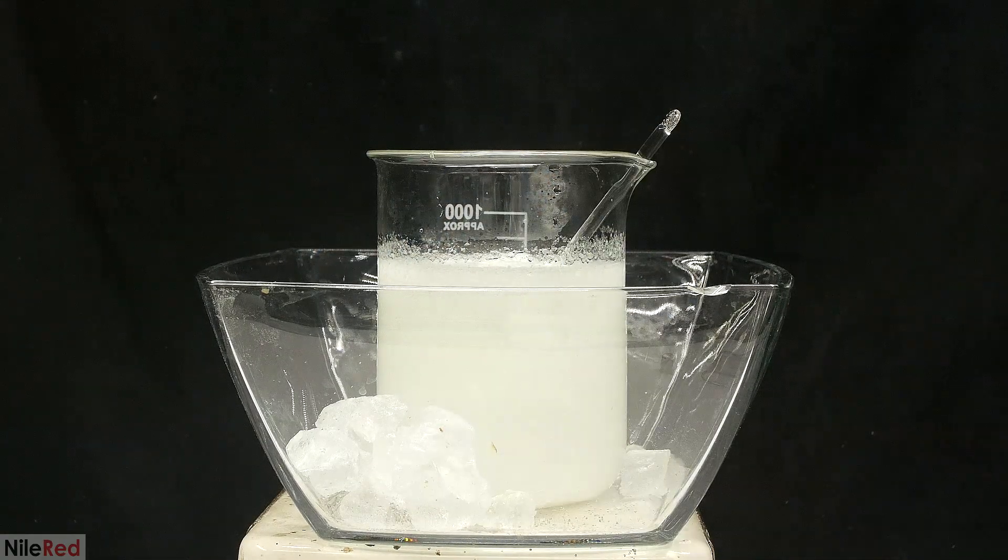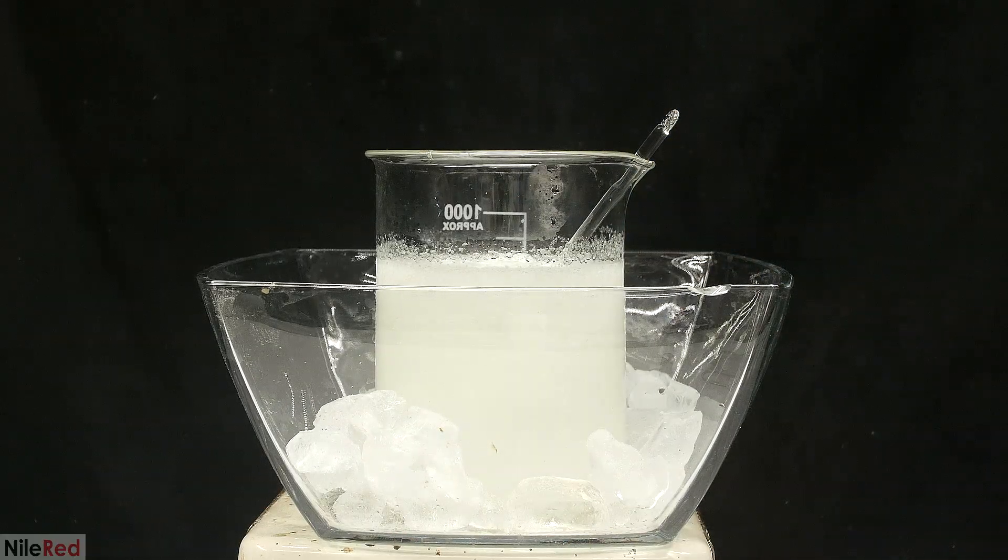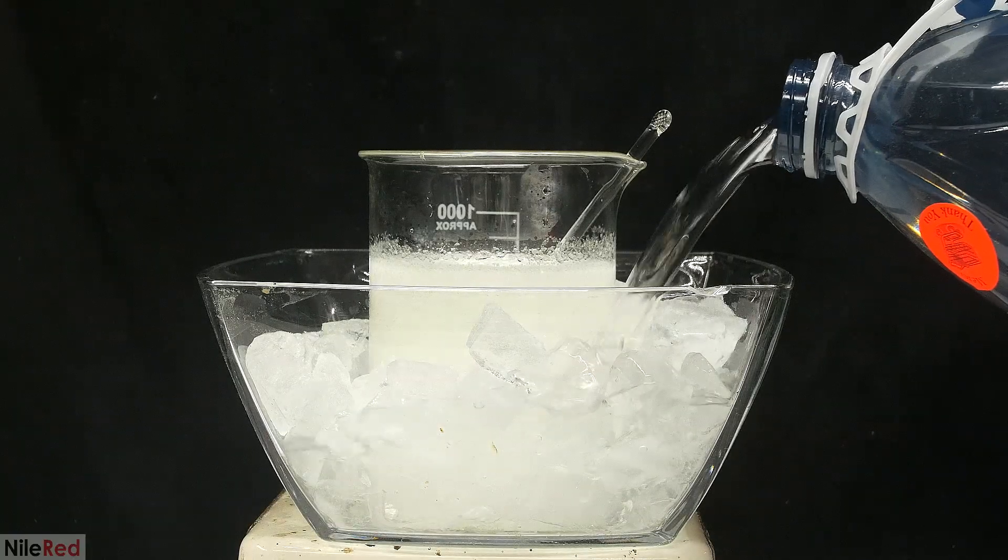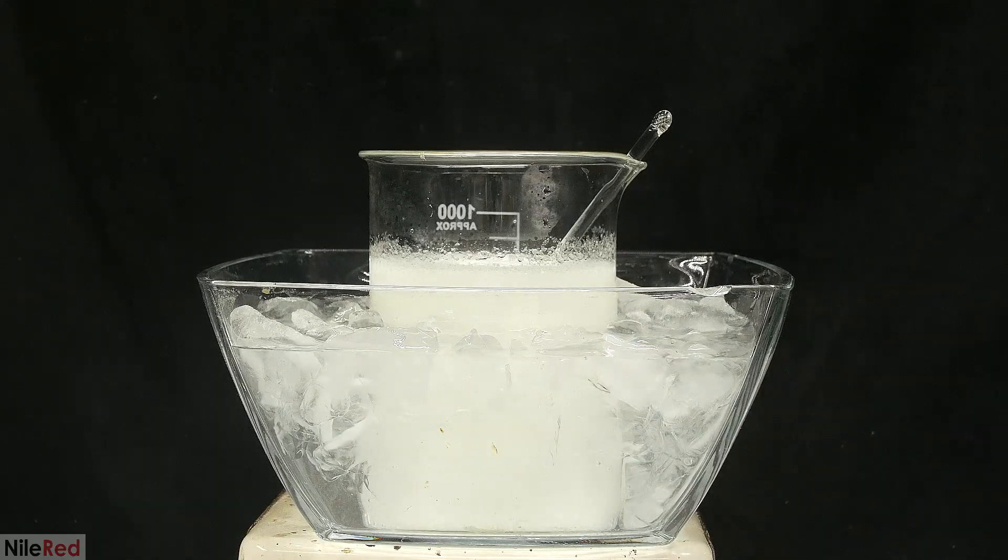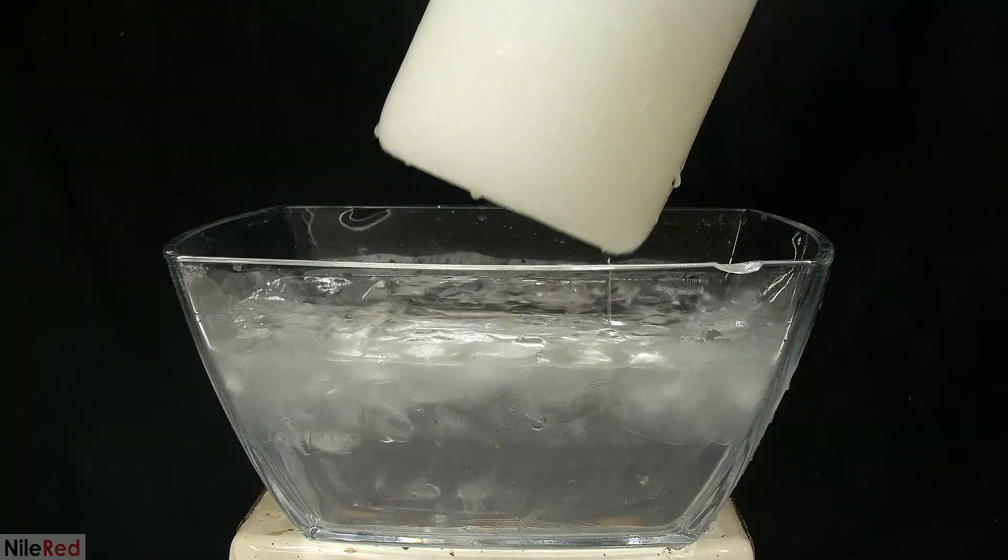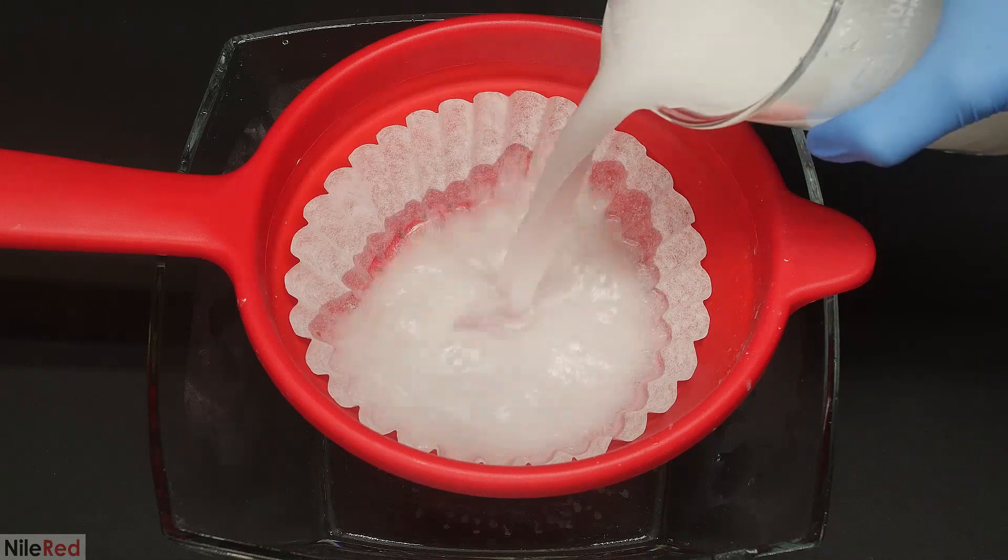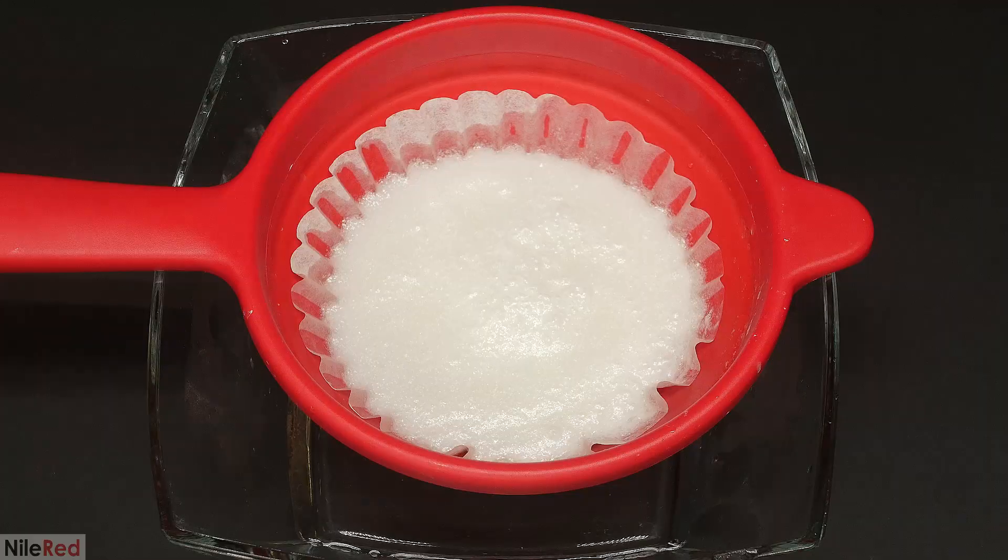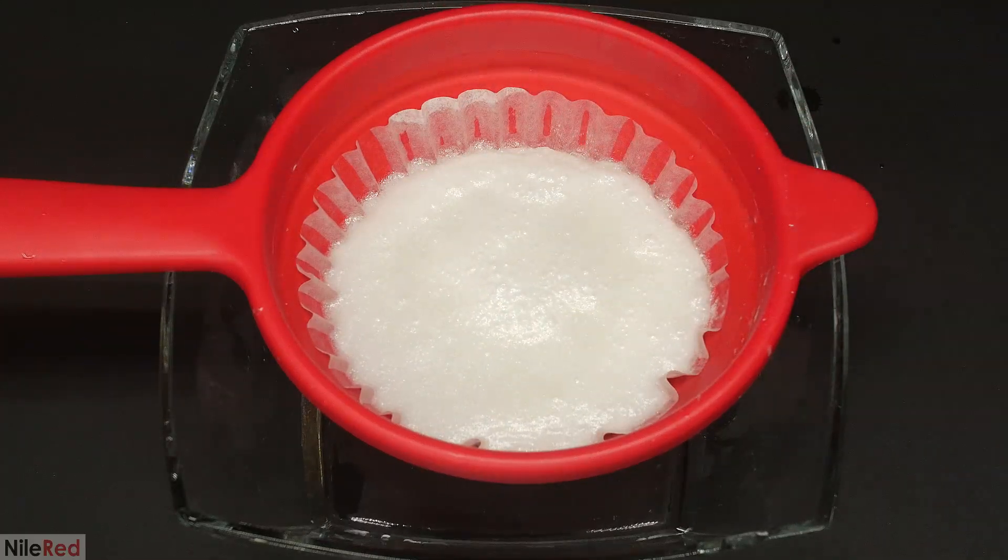To reduce the solubility of acetanilide and precipitate as much as possible, it now needs to be cooled to around zero C. I decided to do this using an ice bath, but it's also possible to just put it in the freezer for a little bit. I let it sit for a couple hours and at this point it should be done. All of the acetanilide is then separated using just a coffee filter.